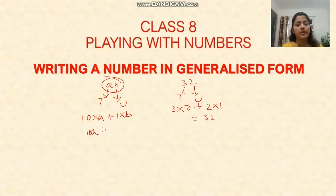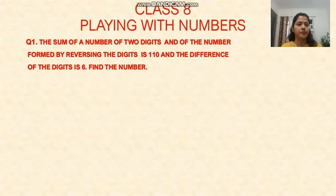Keep this generalized form in mind when solving questions for two-digit or three-digit numbers. I have taken one question: The sum of a number of two digits and the number formed by reversing the digits is 110.